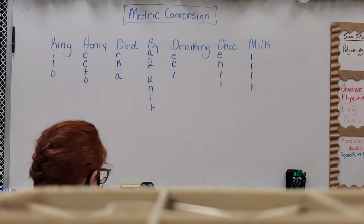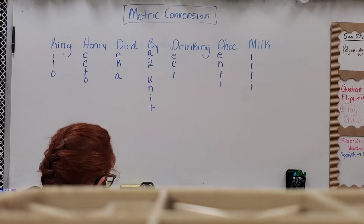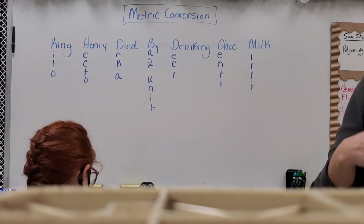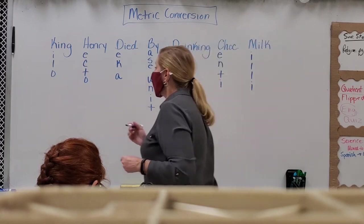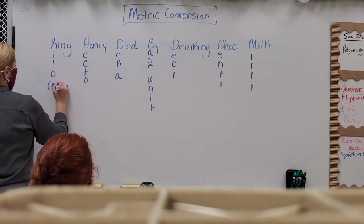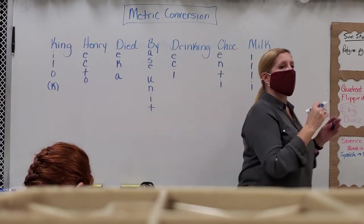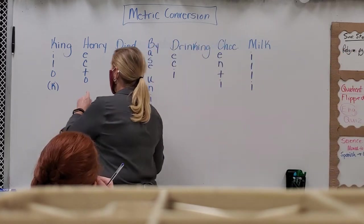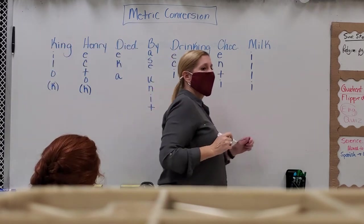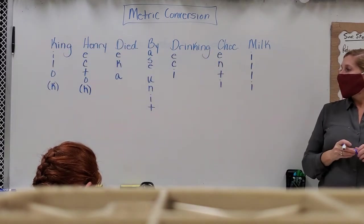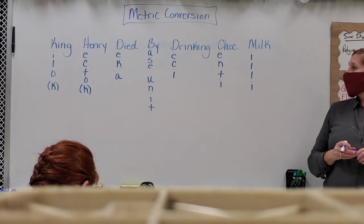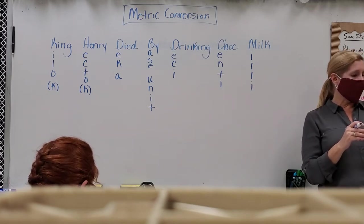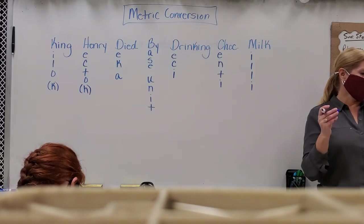Now I'm going to give you the letter prefix that we use, because we don't want to write that out every time — we abbreviate, just like inches is abbreviated as 'in.' Kilo is abbreviated with a lowercase K, so kilometers is km and kilograms is kg. Hecto is a lowercase H. We keep them all lowercase except for liters — that one we do uppercase because a small L looks like a one and it got confusing.